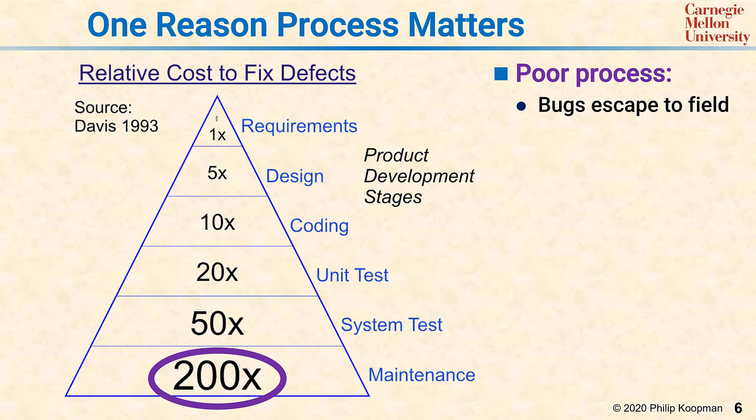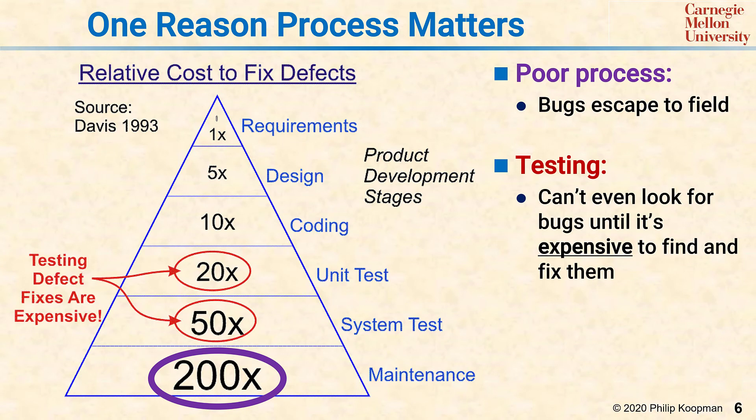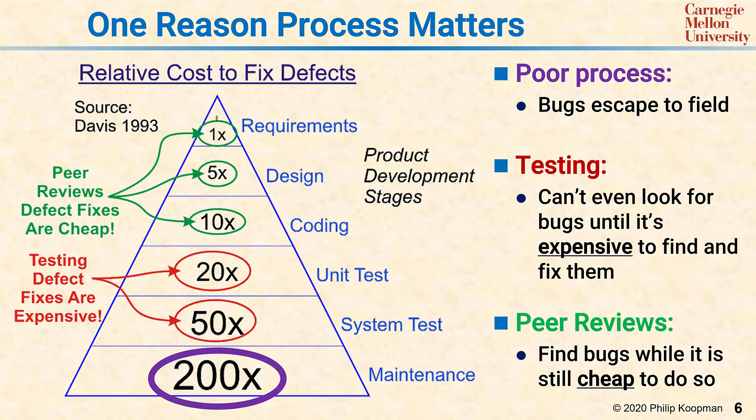Typically, if an organization has a lot of escapes to the field, they'll concentrate on testing first. Improving your testing process — for example, using unit test in addition to system test and acceptance test — can help reduce bugs. But testing isn't even looking at bugs until it's already really expensive to fix them, so that's nice to do, but you want to go further. To really have a good process that's producing high quality software, you also need to do peer reviews back up front where it's cheap to find things and fix them.